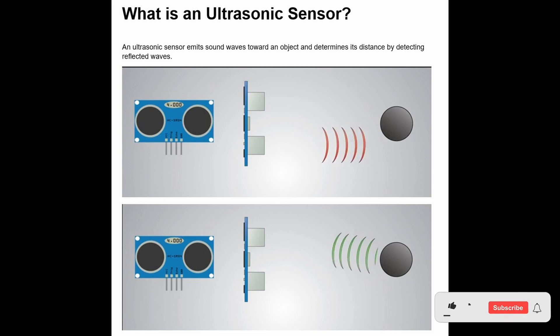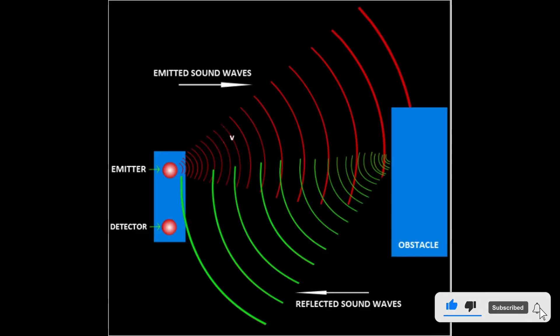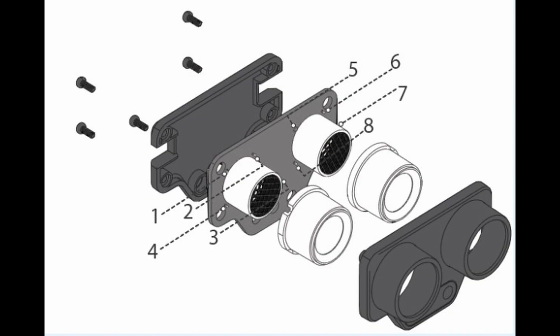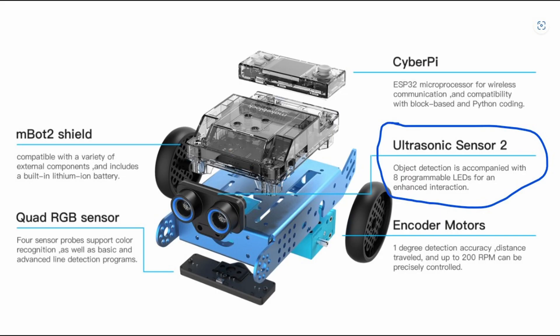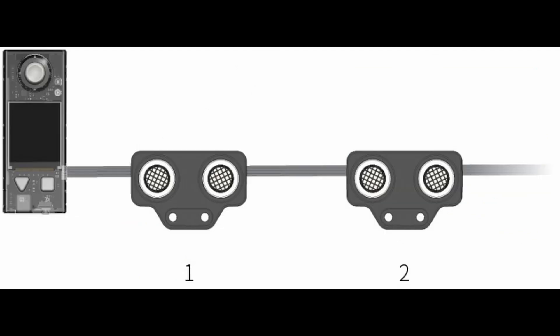What is an ultrasonic sensor? An ultrasonic sensor emits sound waves toward an object and determines its distance by detecting reflected waves. It is an electronic device that measures the distance of a target object by emitting ultrasonic sound waves and converts the reflected sound into an electrical signal.